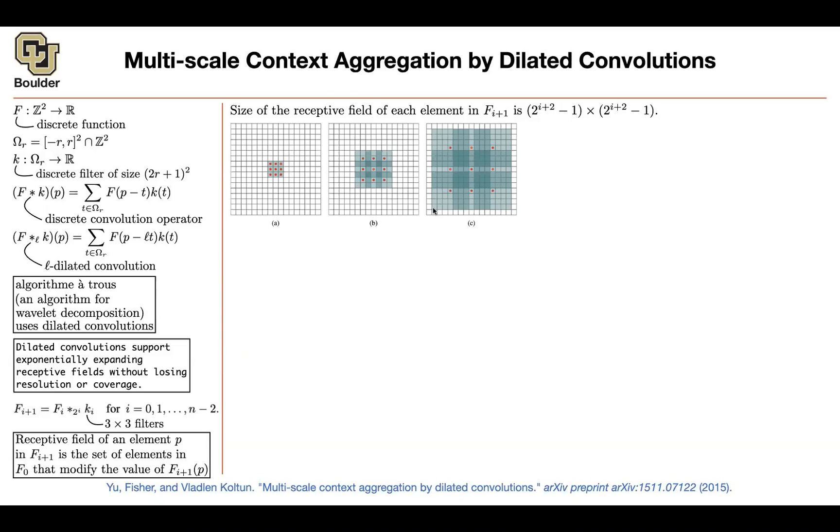So if you change any of these, the pixel value in the third layer is going to change. And that's going to give you a receptive field. But this is powerful stuff. Dilated convolutions.